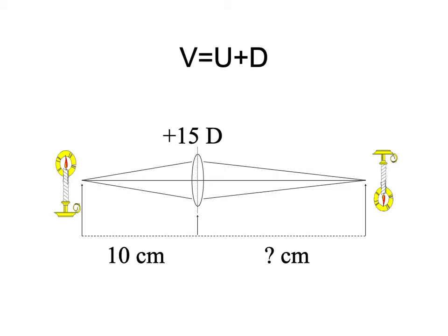What is the vergence coming into this lens? Just as the rays of light encounter the lens, they are one-tenth of a meter away. The inverse of that is 10. Because they converge to the left just as they're about to enter, the vergence is minus 10 coming in. What is the vergence coming out? The vergence coming out equals the vergence coming in plus the contribution of the lens — minus 10 plus 15 equals plus 5 coming out.